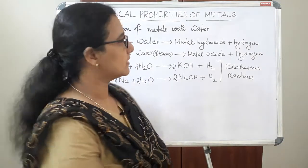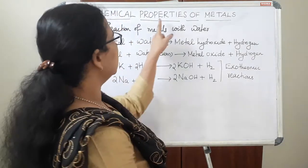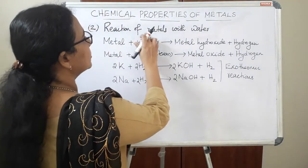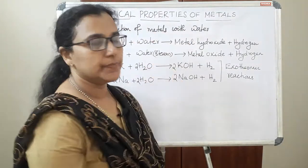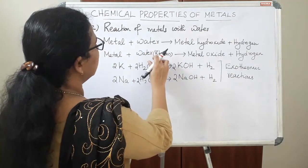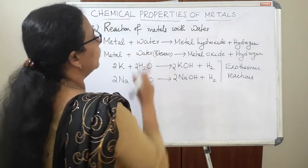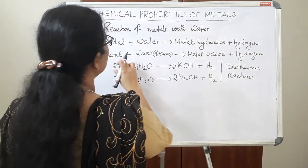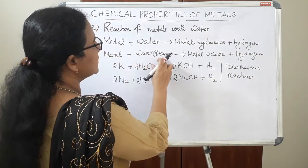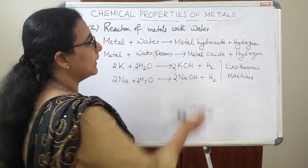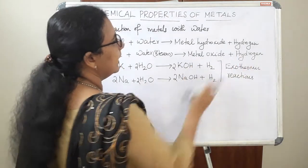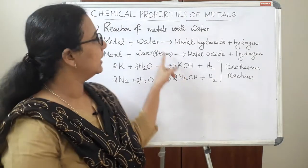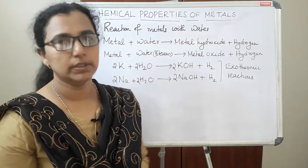Hello students, let us study the chemical properties of metals. The second reaction is reaction of metals with water. There are two general equations. One is metal plus water gives metal hydroxide and hydrogen. Then metal plus water, if water is used in the form of steam, gives metal oxide and hydrogen gas. These are the two general equations in the reaction of metals with water.